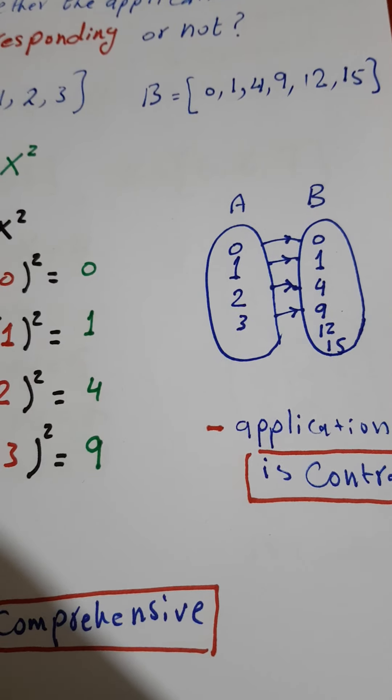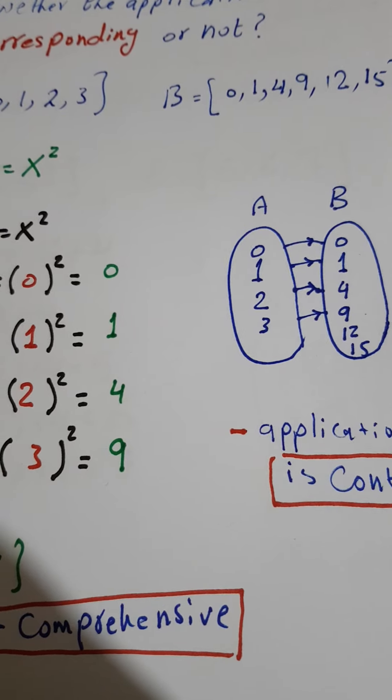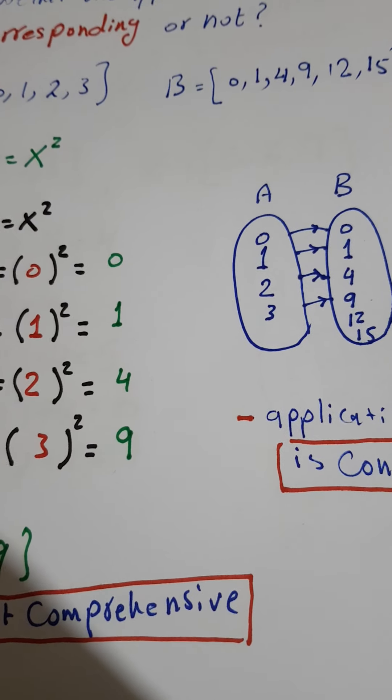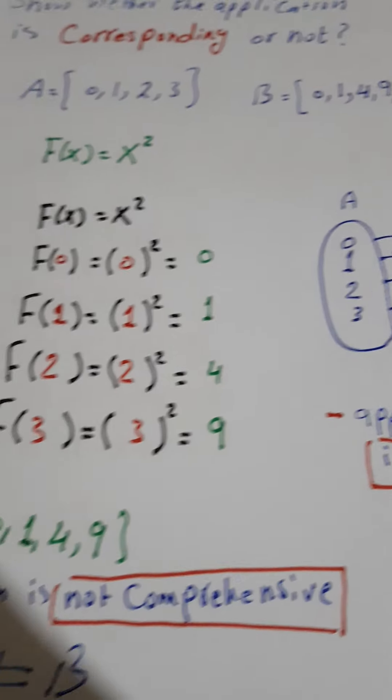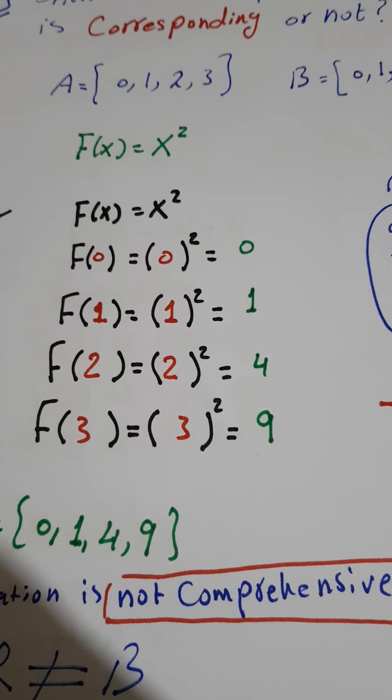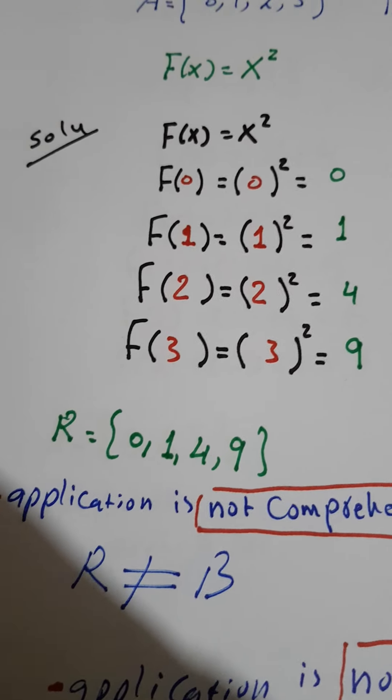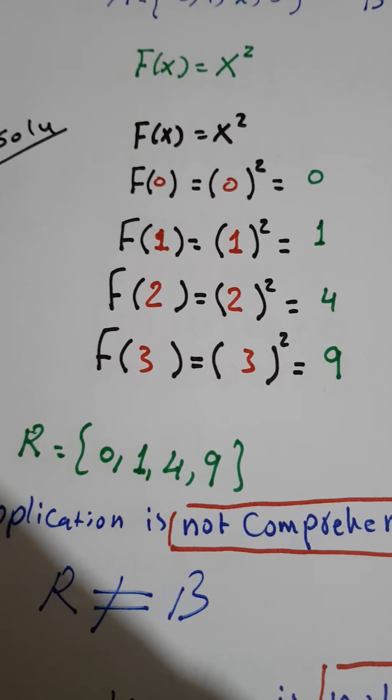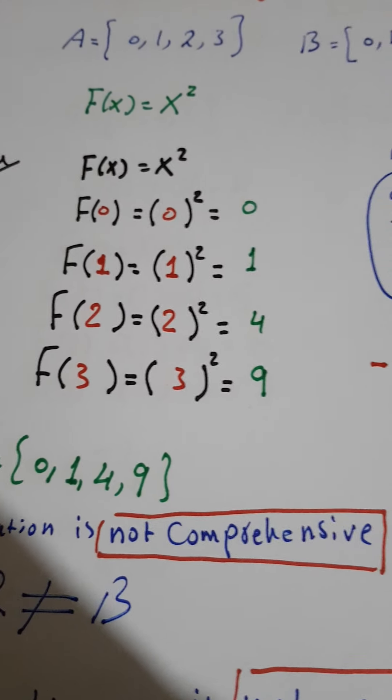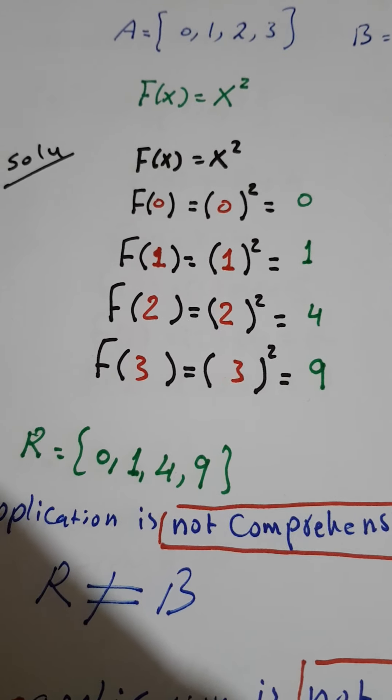B is equal to {0, 1, 4, 9, 12, 15}. The application law f(x) = x². Solution: f(x) = x². We take 0: 0² = 0 and goes to...